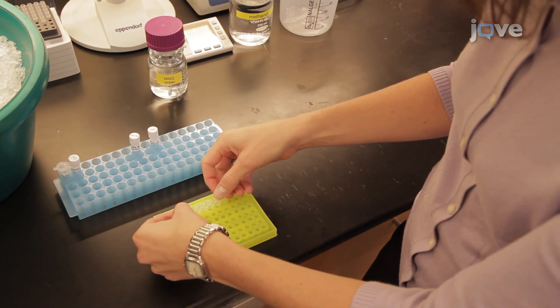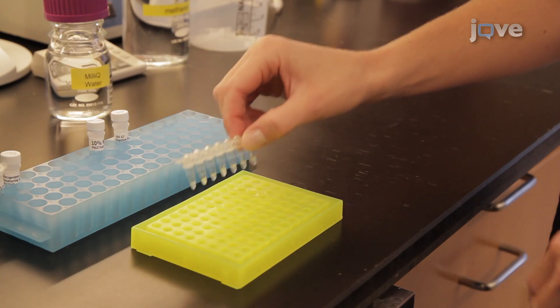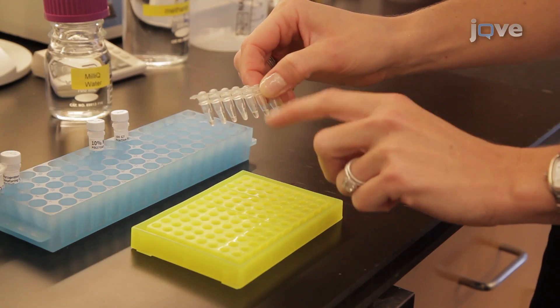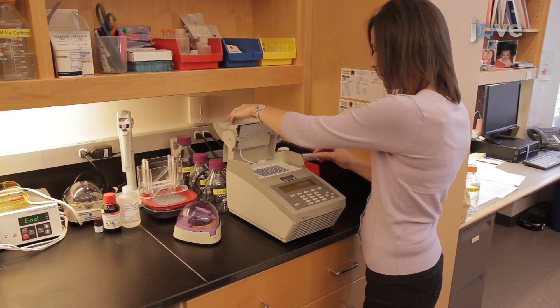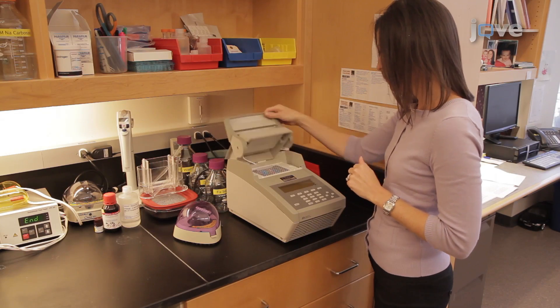Close the PCR tubes using new caps, then mix the tubes by gently tapping 4 times. After spinning down the contents, place the tubes in the thermocycler.